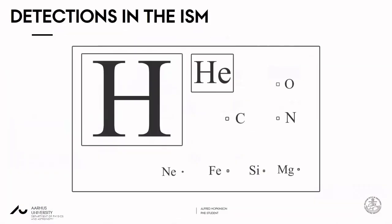We have now detected over 200 different molecules in the interstellar medium. This is the Astronomers Periodic Table. It gives the elements that you find, and the size of the box gives the relative abundance. So as you can see, hydrogen and helium dominate.